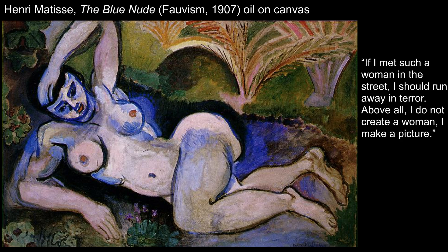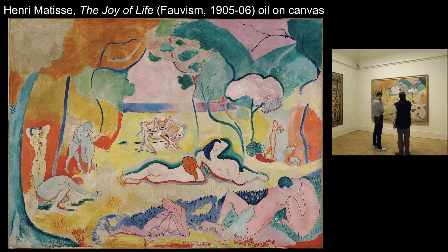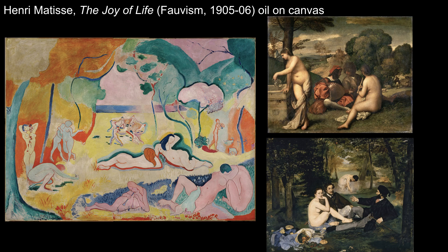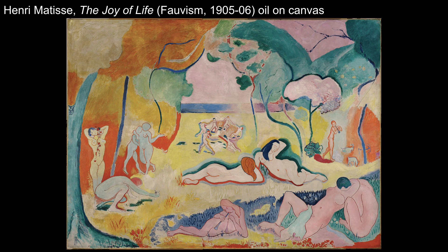Matisse wrote about this work saying that if he met a woman like this in the street, he would run away in terror, and: 'Above all, I do not create a woman, I make a picture.' He wants us to read this work as a painting — as a painted surface first, not as a woman — and this makes it modern. We see him providing a similar modern spin in his Joy of Life, his take on the pastoral picnic we saw in Giorgione, Titian, and Manet. Canonical subject matter, but the paint handling is a stark departure from how artists typically use color to depict the natural world.